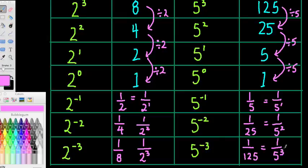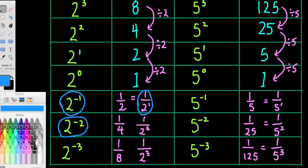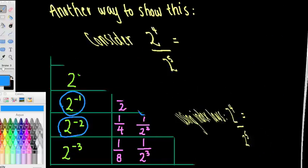So we have done exactly the same thing with this pattern — divided by 2 each time and divided by 5 each time. 2 to the negative 1 is actually equal to 1 over 2, or 1 over 2 to the positive 1. If we have 2 to the negative 2, it looks like that whole term has moved to the bottom of the fraction — it's now the denominator over 1 — and that index is now positive. There is a pattern to this and we can get a general form for this negative index rule.